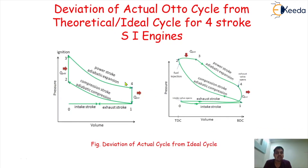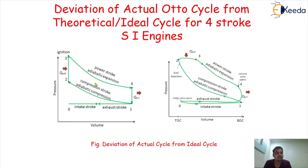Here on your screen we have two diagrams: one is a PV diagram of the theoretical Otto cycle and another one is a PV diagram of the actual engine cycle. Though we are applying this particular Otto cycle to the SI engines, we will never get practically such kind of curves.